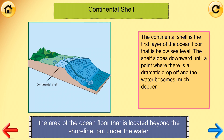Continental Shelf: the area of the ocean floor that is located beyond the shoreline but under the water. The continental shelf is the first layer of the ocean floor that is below sea level. The shelf slopes downward until a point where there is a dramatic drop-off and the water becomes much deeper.